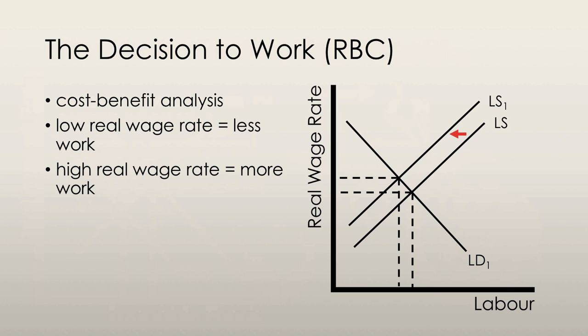The graph shown is a continuation from the previous graph. It shows what happens following a decrease in the demand for labour. It is worth noting that the demand for labour shifts further to the left than does the supply for labour, so the real wage rate is still less than it initially was.